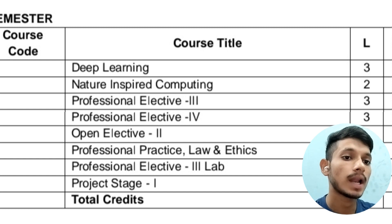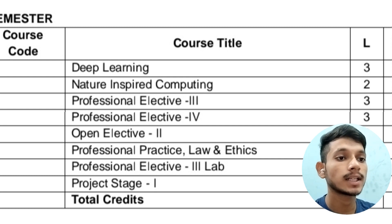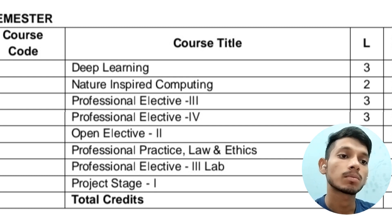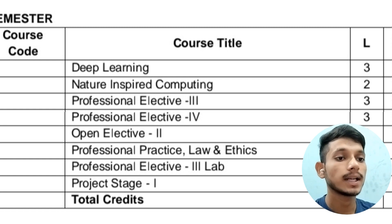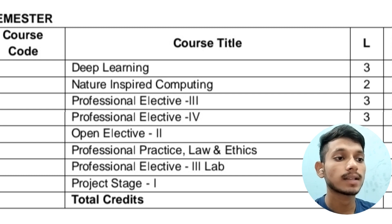Moving on to fourth year, in the first semester you will have eight subjects including projects and labs. The subjects are: Deep Learning, Nature Inspired Computing, Professional Elective 3, Professional Elective 4, Open Elective 2, a subject on Professional Practice, Law and Ethics, a Professional Elective 3 Lab, and a Stage 1 Project. The total credits are 20.